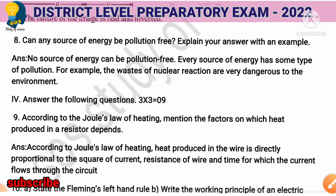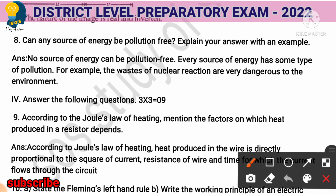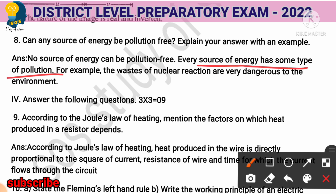Next two-mark question: Can any source of energy be pollution free? Explain your answer with an example. The answer is no — no source of energy can be pollution free. Every source of energy has some type of pollution or pollutants. For example, the waste of nuclear reactions is very dangerous to the environment. You can choose any one example.